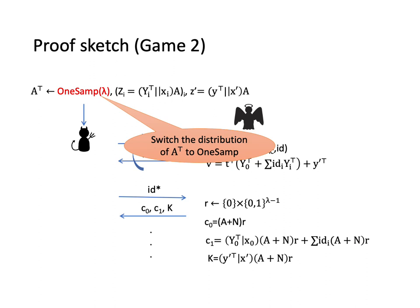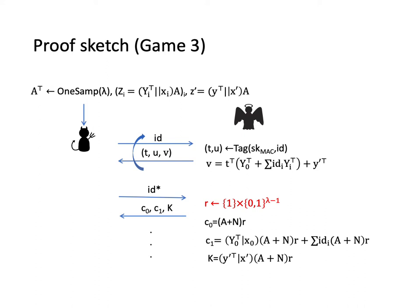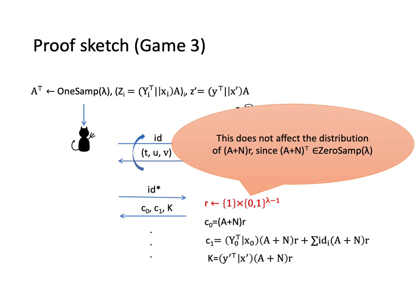In the next game, we switch the distribution of Aᵀ to 1-SAMP. This does not change the view of the adversary due to the indistinguishability between 1-SAMP and 0-SAMP. We now fix the first bit of R as 1 instead of 0. Notice that A plus Nᵀ is a matrix from 0-SAMP now. And the fact about 0-SAMP we mentioned before shows that this change does not affect the distribution of A plus NR.